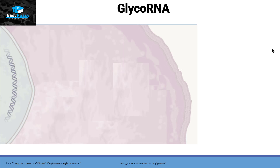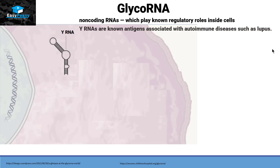It was discovered recently that oligosaccharide chains can also attach themselves to RNAs. In this discovery, the RNA recognized to attach with glycan was YRNA. YRNA is a non-coding RNA known to have regulatory roles inside the cell, and YRNAs are known antigens associated with autoimmune diseases such as lupus.